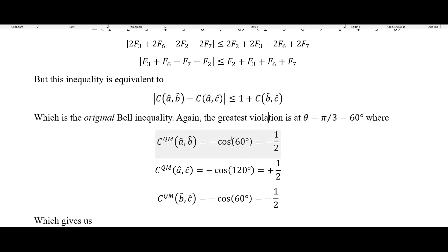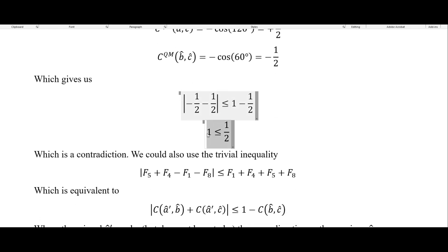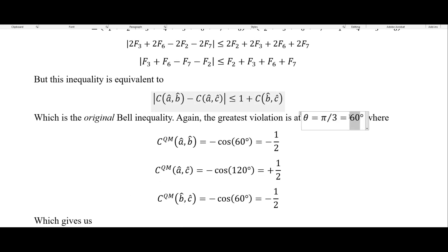And so again, the greatest violation is at theta equals pi over three, which is 60 degrees, where we will have that for A and B that we end up with negative one half. For A and C, it's positive one half. And for B and C, it's negative one half. But yeah, like I said, this is the original Bell inequality here. So you'll see this one or something that looks very much like this in his original paper. And so this gives us this. If we plug these in to this inequality up here, we have minus one half minus one half here, but we're getting the absolute value of that less than or equal to one minus a half. But we can see that this is a contradiction because one is definitely not less than or equal to one half. And so this is our major violation here when theta is at 60 degrees.